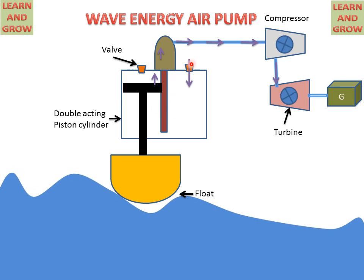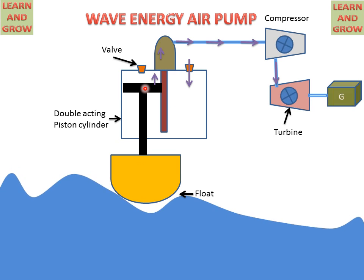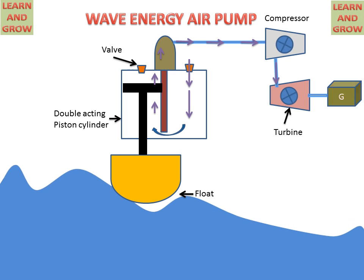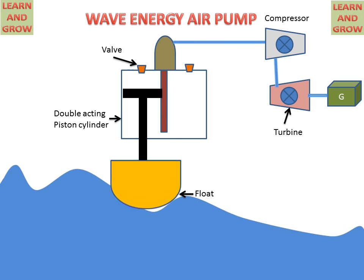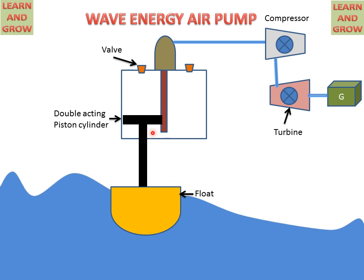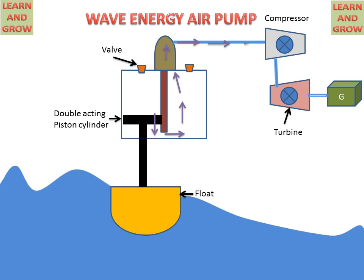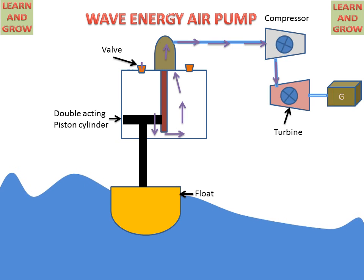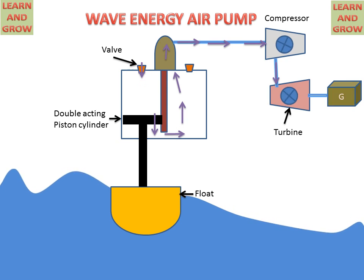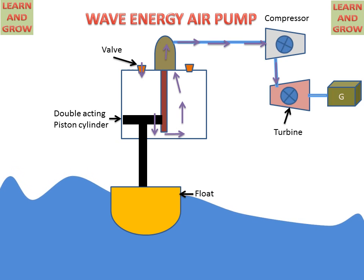Now we see the function of the piston in the reverse manner. Air is sucked in through one area when the piston moves upward. When the piston moves in the downward direction, the collected air is discharged through the other part and goes to the compressor, then to the turbine, and electricity is produced. Air is sucked in by the inlet valve at this time. This is the working of the wave energy air pump with a double acting piston cylinder.